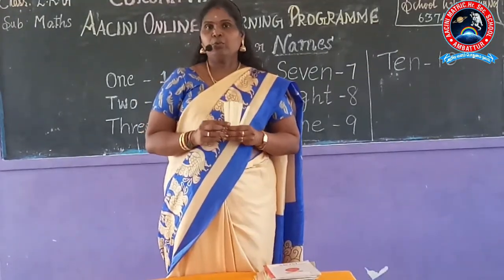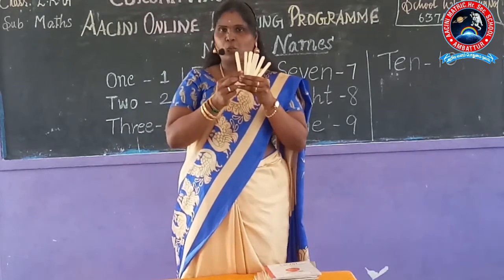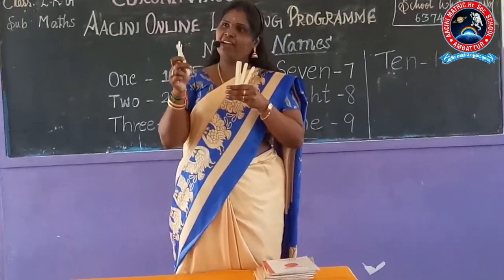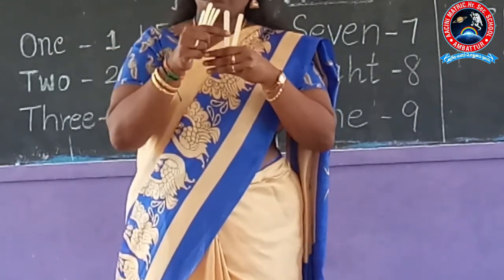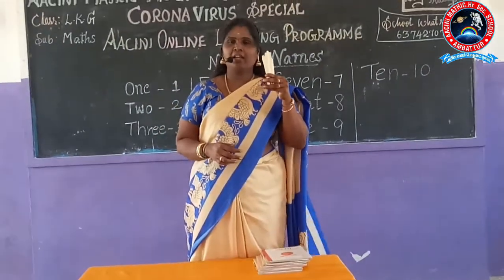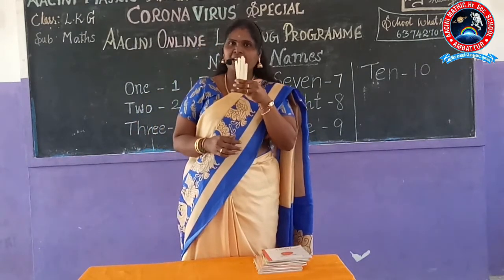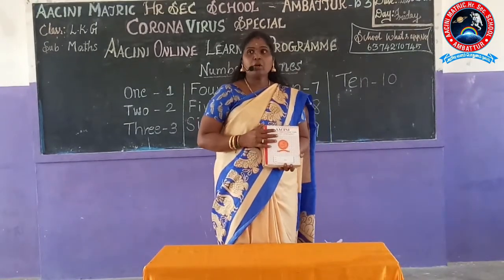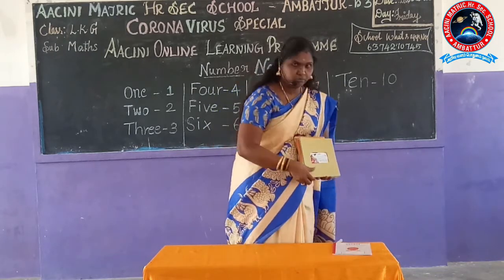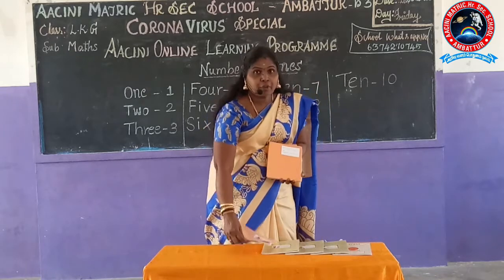Now you are going to count the mobiles — how many are there? Let's count: 1, 2, 3, 4, 5, 6, 7, 8 and 9 — there are 9 mobiles. Tell me the number name of 9: N-I-N-E, 9. Repeat: N-I-N-E, 9.